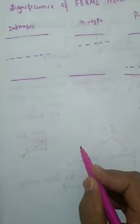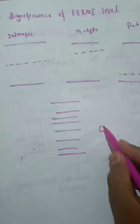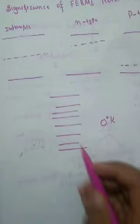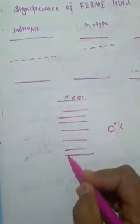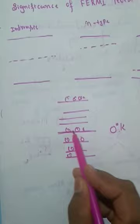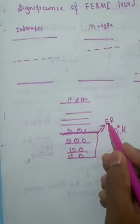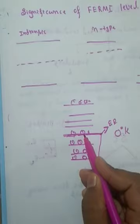Now let's discuss the significance of the Fermi level. Fermi energy is the maximum energy attained by an electron at 0 Kelvin. Assume you have plenty of energy levels. At 0 Kelvin, all electrons fill up the lower energy levels. The topmost filled energy level at exactly 0 Kelvin — the maximum energy attained by an electron — is called the Fermi level. This point is the Fermi level, and it plays a major role in determining conductivity.